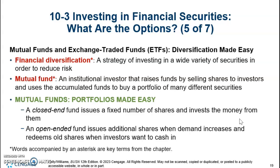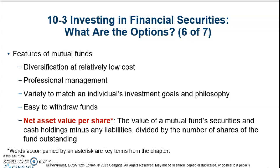There are closed-end funds, which have a fixed number of shares that are issued and invest the money from them. Or an open-ended fund, which issues additional shares when demand increases and redeems old shares when investors want to cash in. One feature of mutual funds is that diversification can be done at a relatively low cost, since it can become quite expensive to diversify on your own. Professional fund management is appealing because investors usually lack the time and expertise to make complex investment decisions, and the variety of mutual funds makes it easier to find one that matches your investment goals.